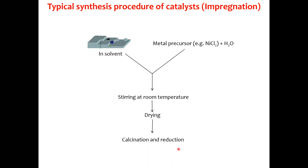After drying, to bind the metal on the surface you do calcination and reduction. Calcination can convert nickel chloride into nickel oxide, and then in reduction, nickel oxide is converted into the reduced nickel form. This is the standard practice in catalyst synthesis.